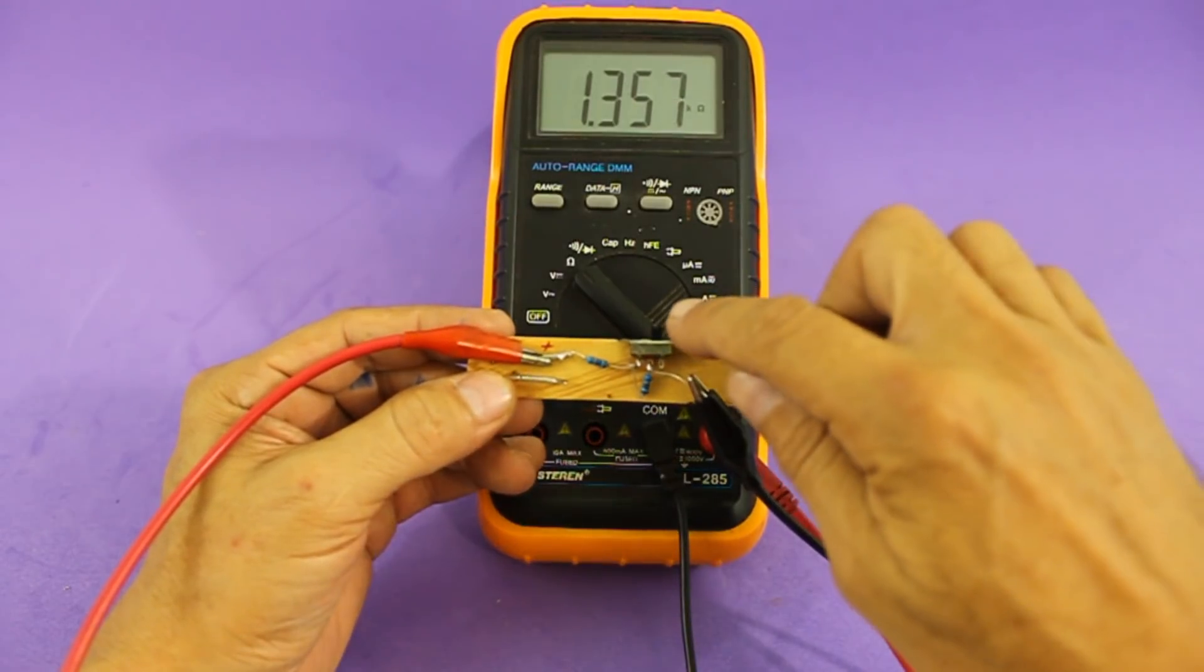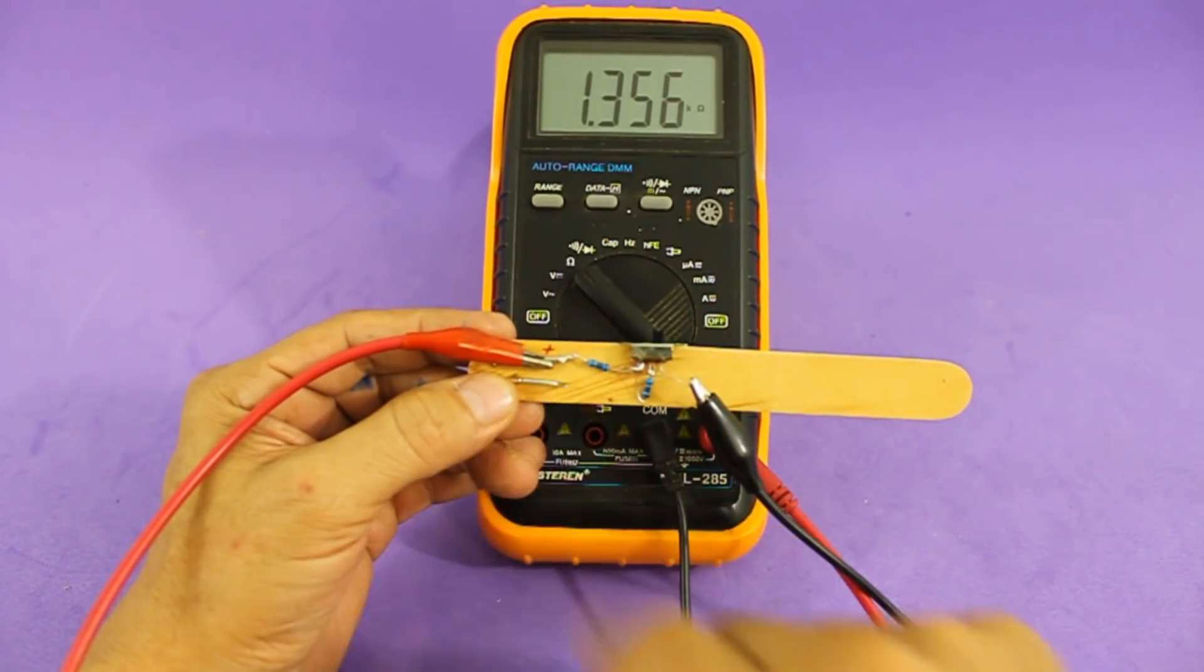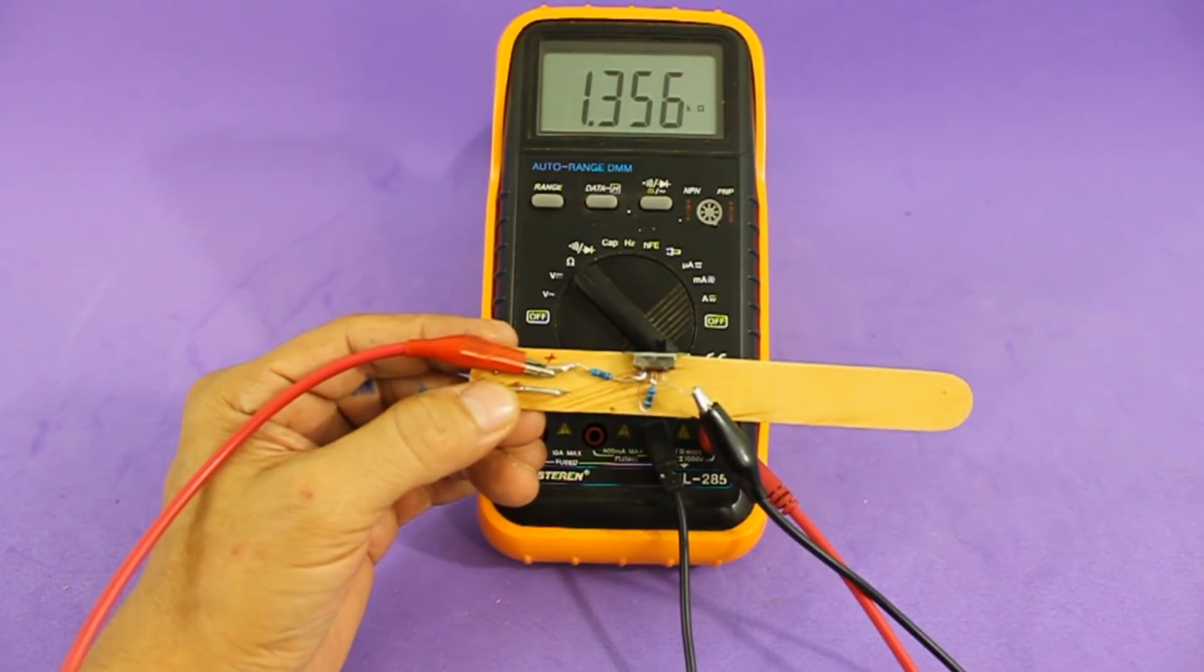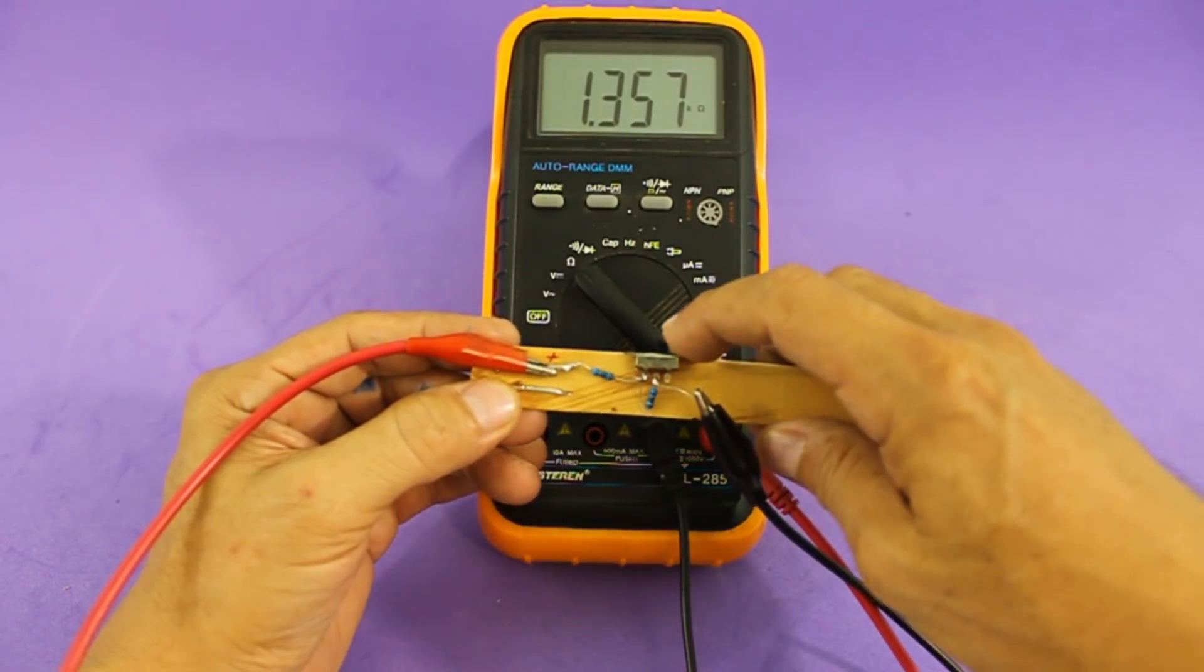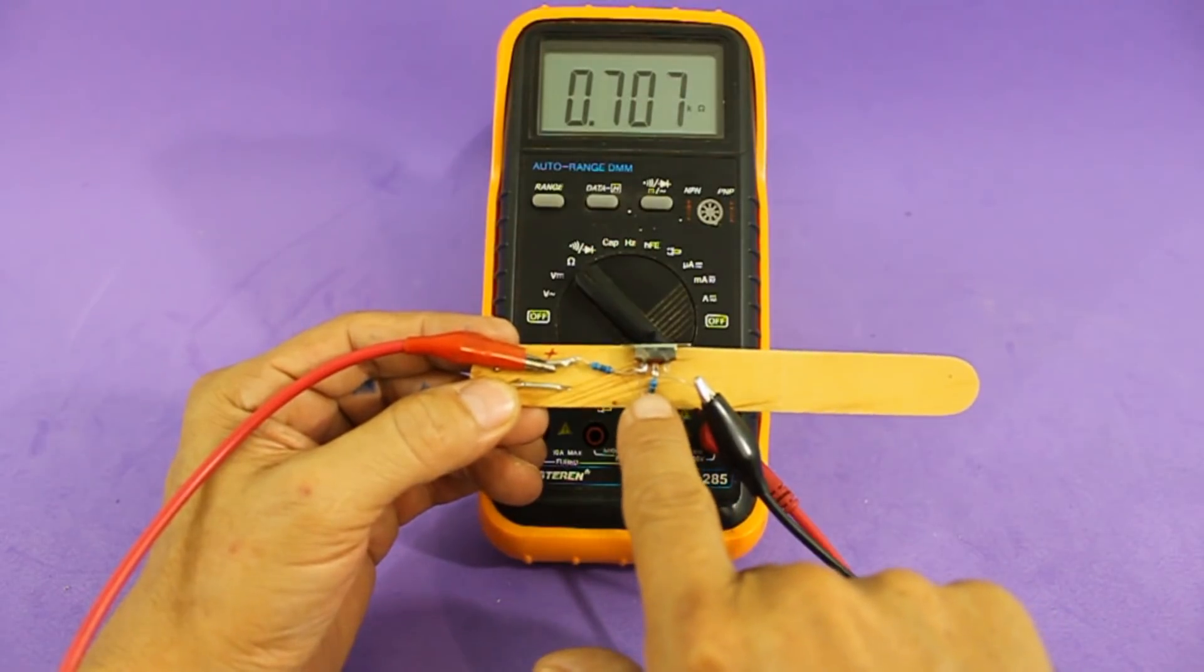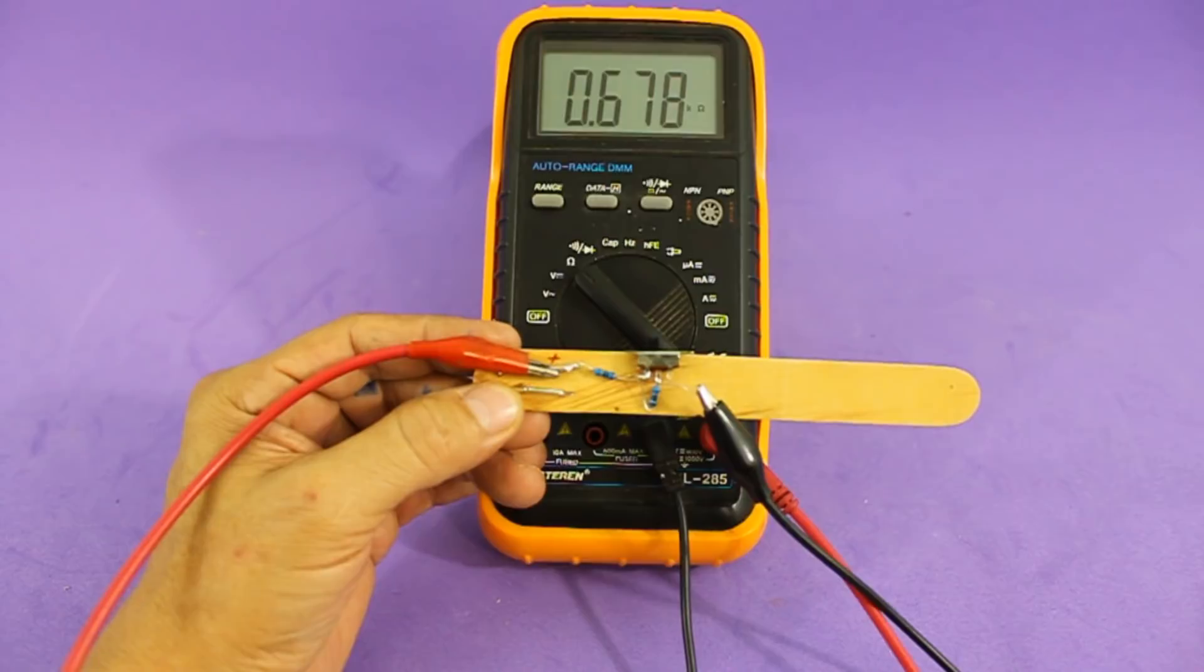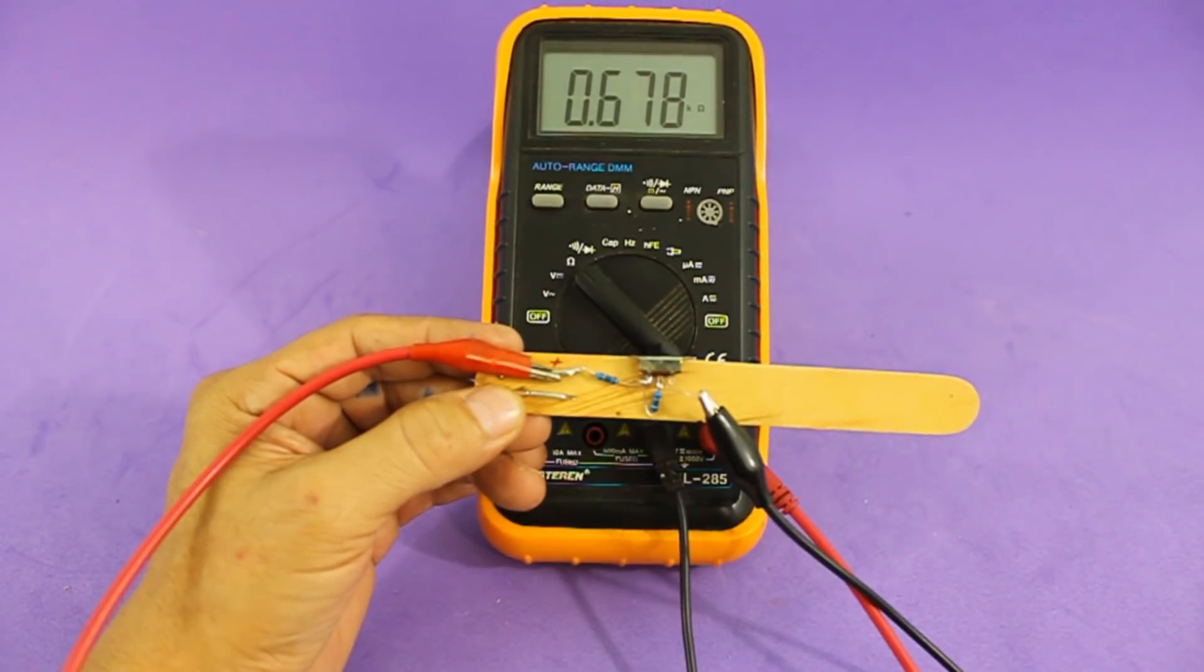With the switch in this position we have the two resistors in series and we have around 1.4 kilo ohms. And when we move the switch one resistor is shorted and we only have the value of the first resistor 680 ohms.